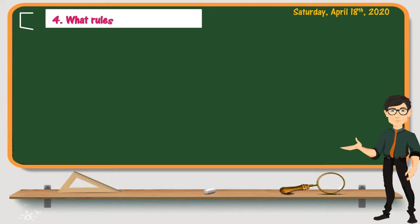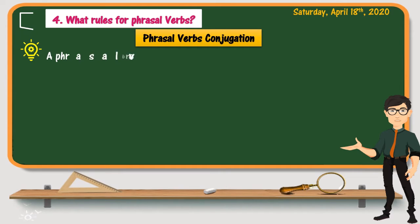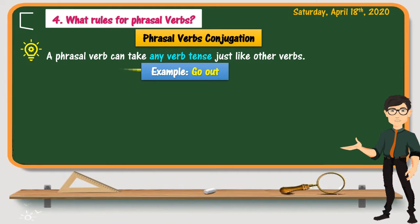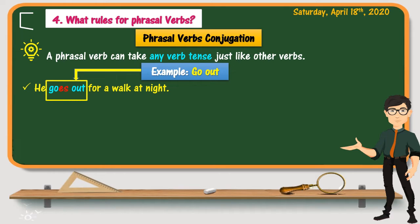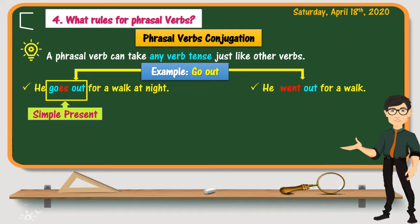The last thing you should know about phrasal verbs is that they can take any verb tense, just like other verbs. For example, 'He goes out for a walk at night' — goes out is the simple present of go out. 'He went out for a walk' — went out is the simple past. Notice that the changes are made to the verb only, not the particle.